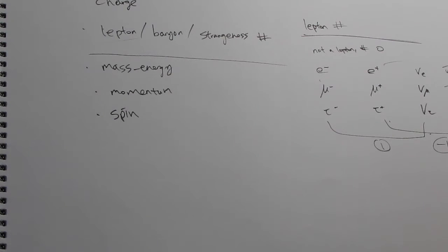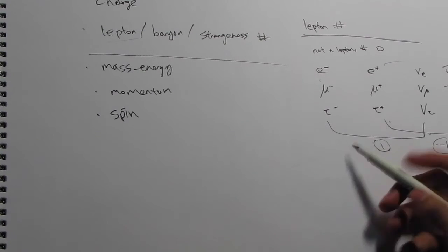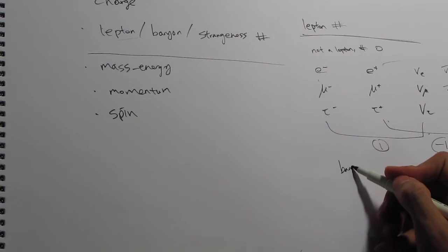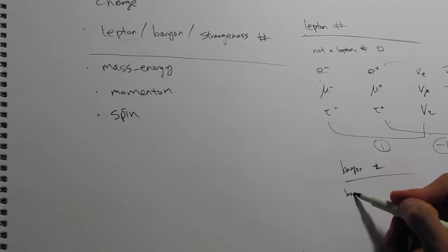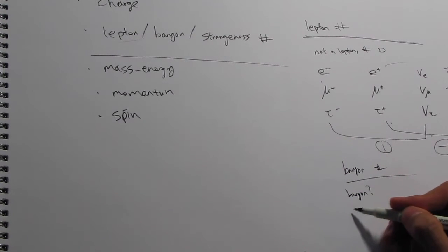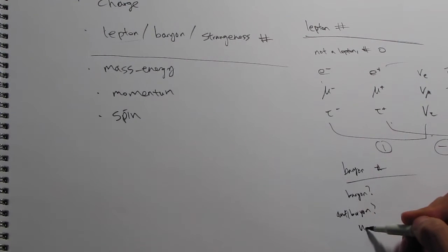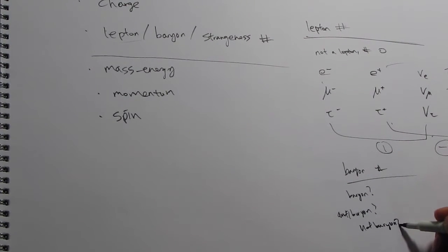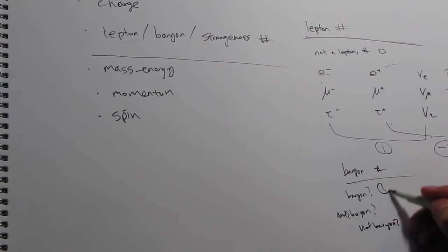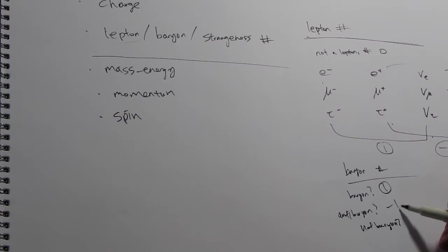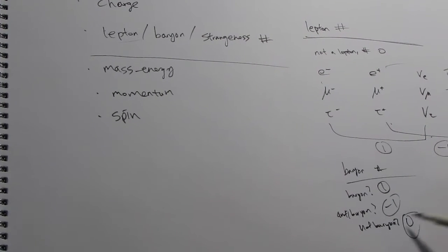The baryon number works basically the same way. There are three possibilities: if it's a baryon, the baryon number is one. If it's an anti-baryon, the baryon number is negative one. If it's neither, the baryon number is zero.